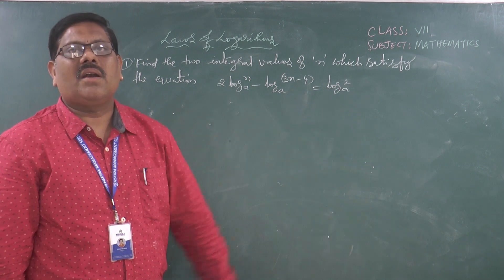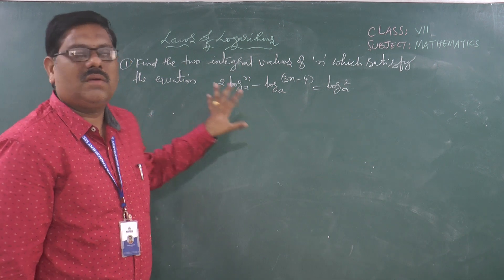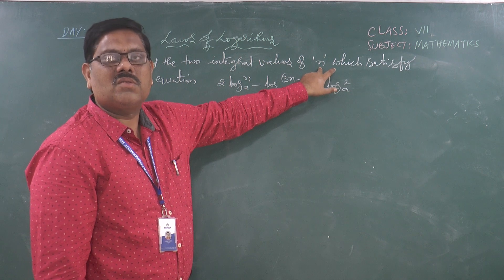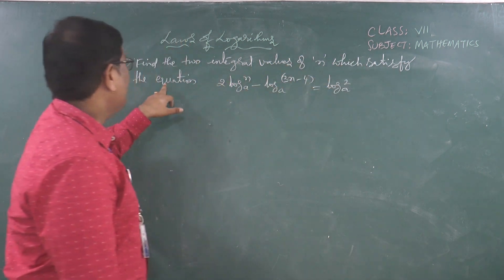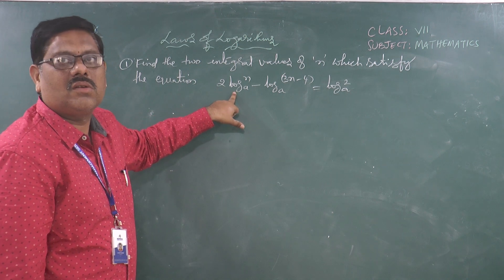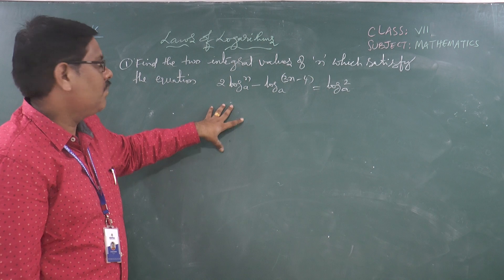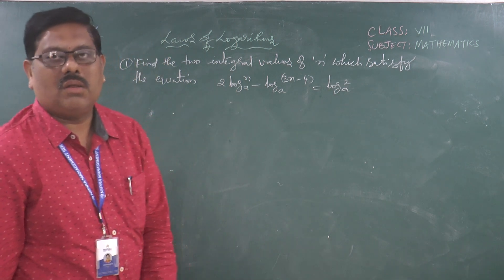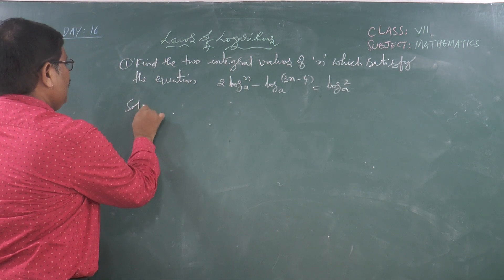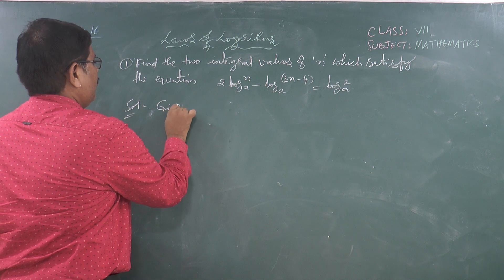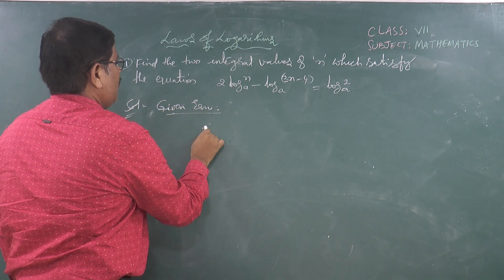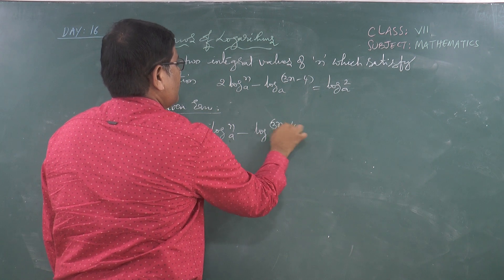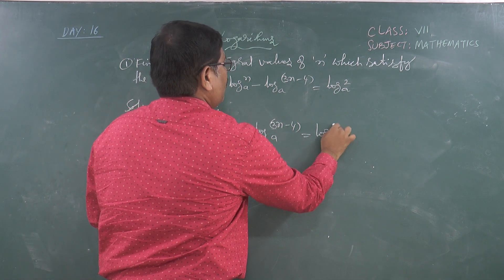In addition to that, we have seen some important results. Based on that, we are going to solve these problems. If you look at the first problem: find the two integral values of n — meaning values of n must be integers — which satisfies the equation. Logarithms are involved. The equation is: 2 log n to the base a minus log (3n minus 4) to the base a is equal to log 2 to the base a.